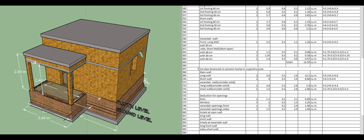For the lintel and parapet portions: length = 3.4 meters (same as the long wall section). Number of long walls = 2. Using length 5.6 meters, width = 0.3, height = 0.15 meters. Total quantity = 0.5 cubic meters.